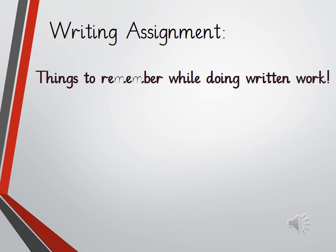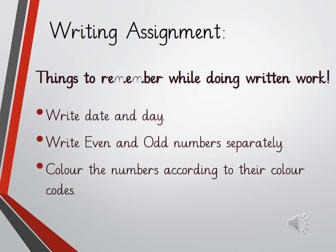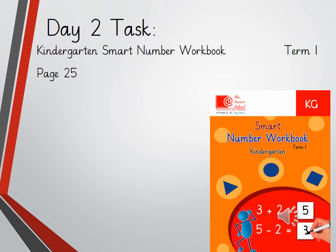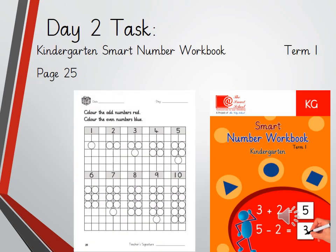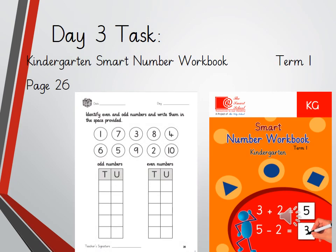It's time to do some more writing assignments. Things to remember while doing written work: write the date and day, write even and odd numbers separately, and color the numbers according to their color codes. Take out your smart number workbook and open page number 25. Look at the numbers, count the circles, and color the odd numbers red and even numbers blue.